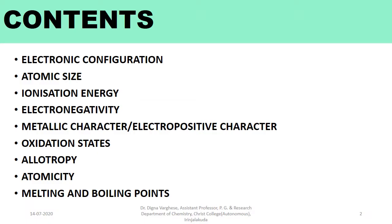Contents: Electronic configuration, atomic size, ionization energy, electronegativity, metallic character or electropositive character, oxidation states, allotropy, atomicity, melting and boiling points.